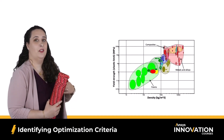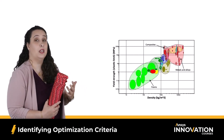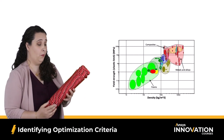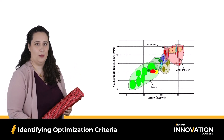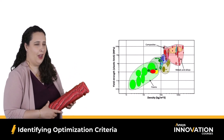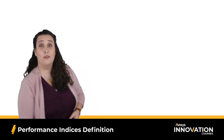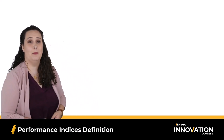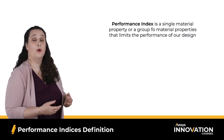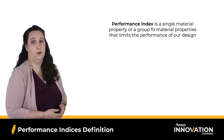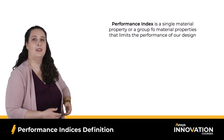I mentioned that this objective relates to the function, but I have yet to include the fact that this rope will be acting as a tie in tension while I'm rock climbing. How does this come into play in my chart? This is where performance indices come in. A performance index is a single material property or a group of material properties that represent the performance of our design.